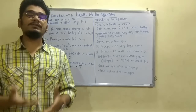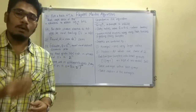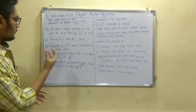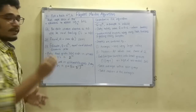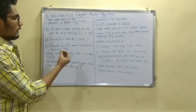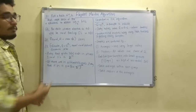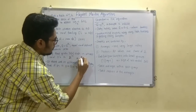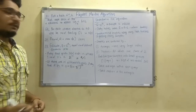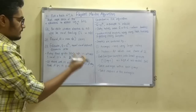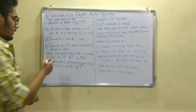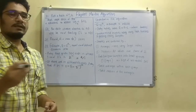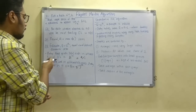Next we look at the probability distribution. This algorithm was initially used for database applications as a probabilistic counting algorithm. The probability is given as follows: for a particular hash value H(a), the probability that it ends in at least i number of zeros is 2 raised to minus i. In binary format there are two variables, 0 and 1, and we consider only zeros here, so for denoting zeros we use i.